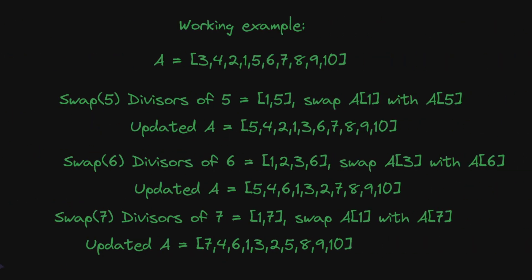Let's solve it further. When we call swap 5, the divisors of 5 are 1 and 5. The largest proper divisor would be 1. So we swap a1 with a5. The updated array is 5, 4, 2, 1, 3, 6, 7, 8, 9, 10.